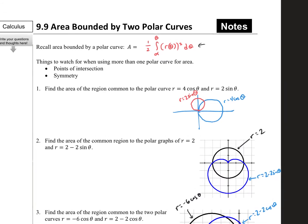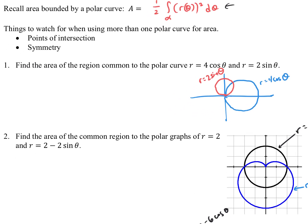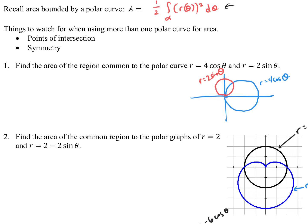So let's look at this first problem. We're going to find the area of the region common to the polar curves r equals 4 cosine theta and r equals 2 sine theta. I went ahead and graphed those for you — you can graph those in your calculator in polar mode. My idea here is to think about what happens as I sweep out an angle. Starting at angle zero and sweeping out, the thing defining the outside edge is the red graph, 2 sine theta, until I hit where the two curves intersect.